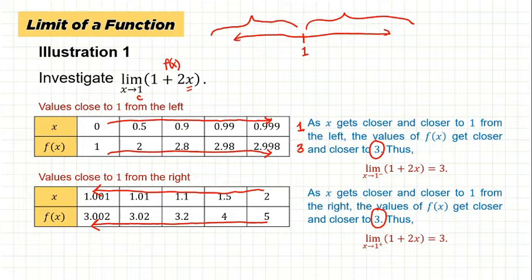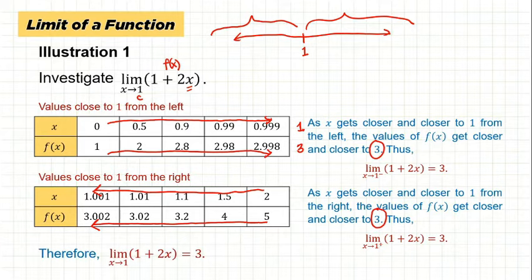Since the left-hand limit and the right-hand limit both exist and are equal, we conclude that the limit of 1 + 2x as x approaches 1 is equal to 3.